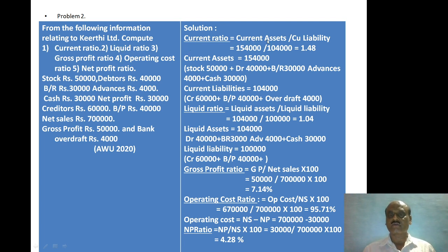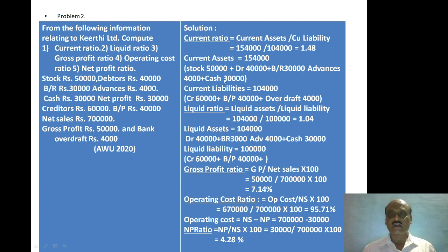Current ratio = current assets divided by current liabilities. Current assets = stock Rs. 50,000 + debtors Rs. 40,000 + bills receivable Rs. 30,000 + advances Rs. 4,000 + cash Rs. 30,000 = Rs. 1,54,000. Current liabilities = creditors Rs. 60,000 + bills payable Rs. 40,000 + bank overdraft Rs. 4,000 = Rs. 1,04,000. Applying the formula: 1,54,000 divided by 1,04,000 = 1.48 is the current ratio.